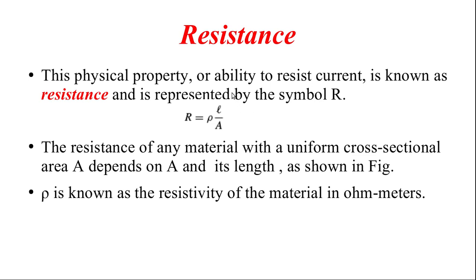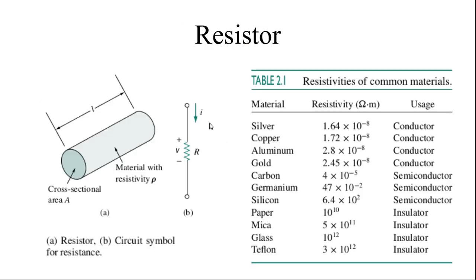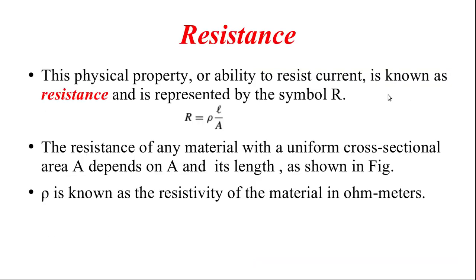Resistance is the ability to resist the current flow. The formula for resistance is R = rho × L / A, where rho is the specific resistance, L is the length, and A is the cross-sectional area. L is directly proportional to R and A is inversely proportional to R. The unit of resistivity is ohm-meter.